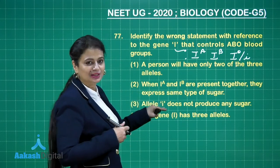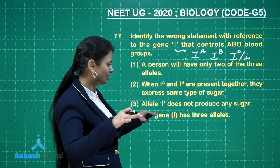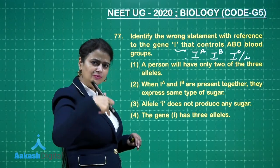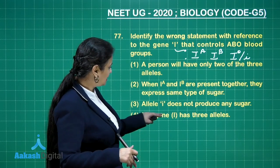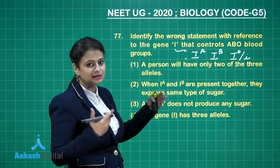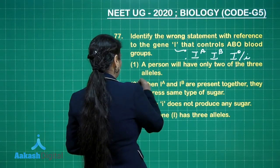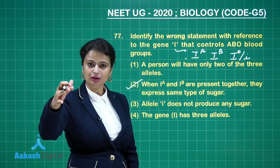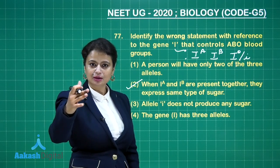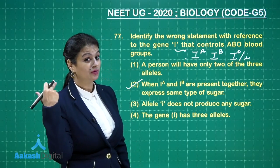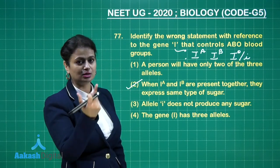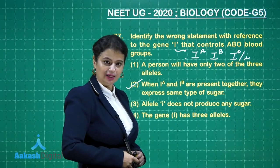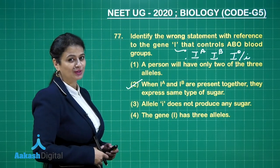Allele Iᴼ does not produce any antigen — unlike Iᴬ which forms antigen A, and Iᴮ which forms antigen B. The gene I has three alleles — that is perfectly correct. ABO blood group involves a single gene with three alleles but only two antigens: antigen A and antigen B. Iᴼ produces no antigen.